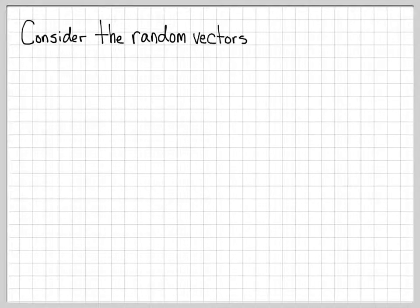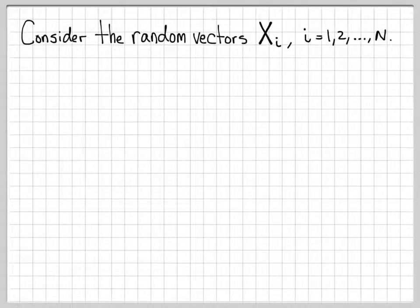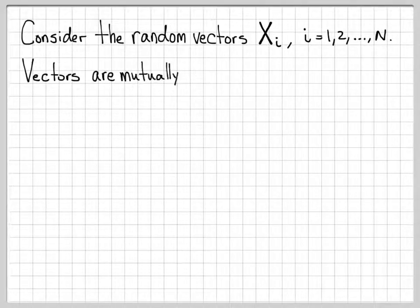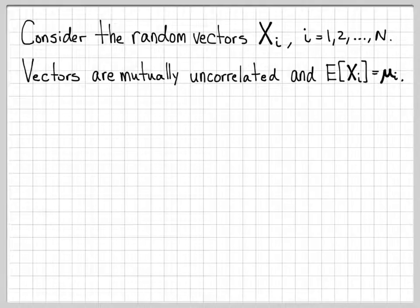We're going to work with some random vectors in this example and do some computations. The random vectors are Xi for i equal 1 to n, a collection of n different random vectors. One thing we know about these random vectors is that they are mutually uncorrelated, and by definition their mean vector is μi. Each one of these vectors has its own mean vector μi.